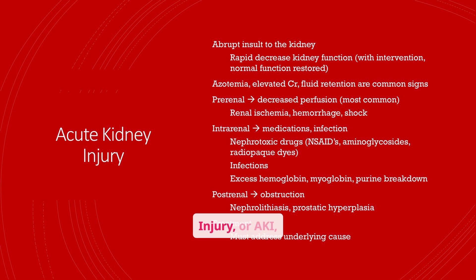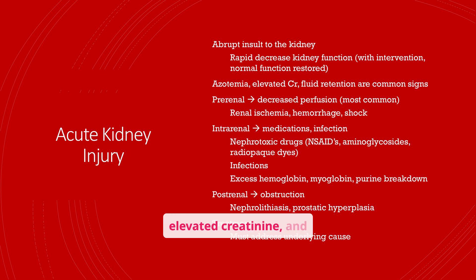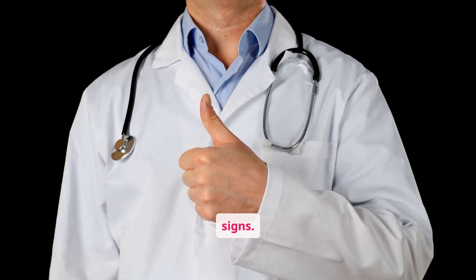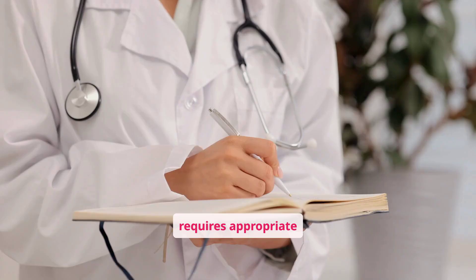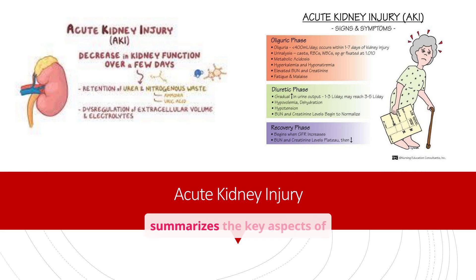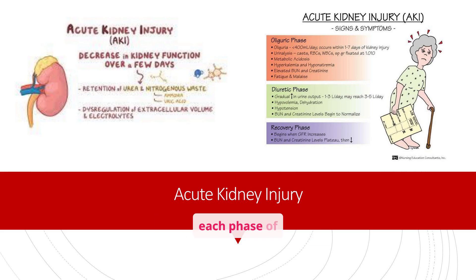Acute kidney injury, or AKI, is an abrupt insult to the kidney that leads to a rapid decrease in kidney function. It can be caused by pre-renal, intrarenal, or post-renal factors. Azotemia, elevated creatinine, and fluid retention are common signs. This diagram illustrates the stages of AKI, including the initial insult, oliguria, diuresis, and recovery. Each stage is characterized by specific clinical findings and requires appropriate management. This illustration also summarizes the decrease in kidney function, retention of waste products, and dysregulation of extracellular volume and electrolytes, listing signs and symptoms of each phase.